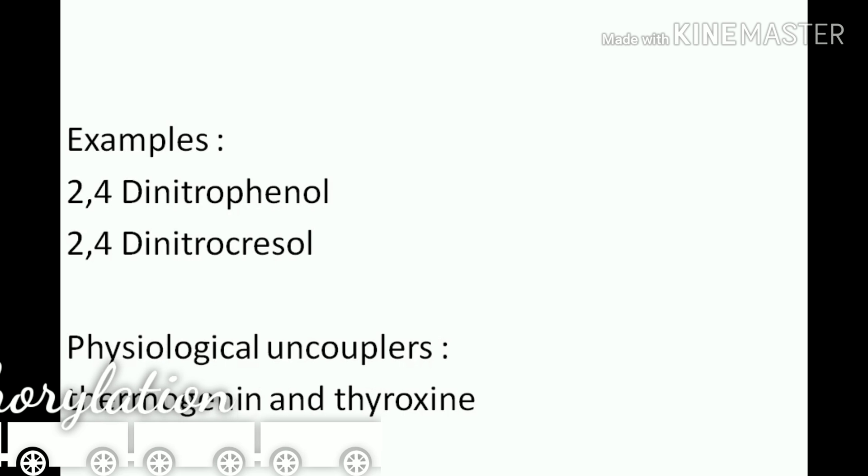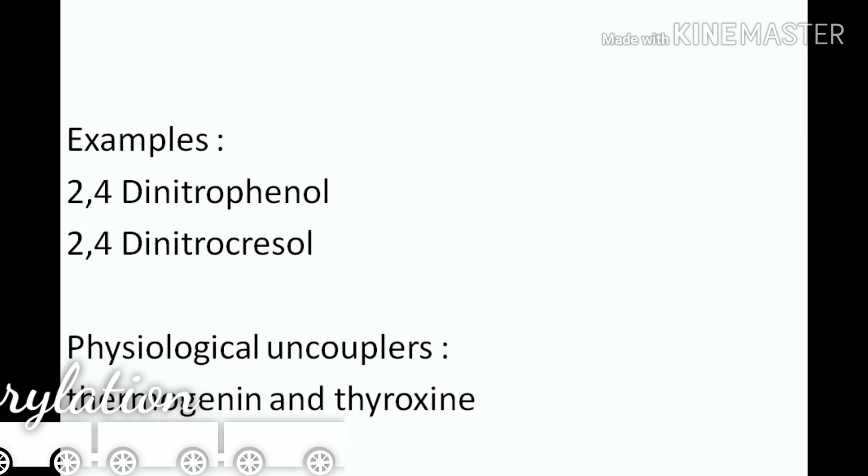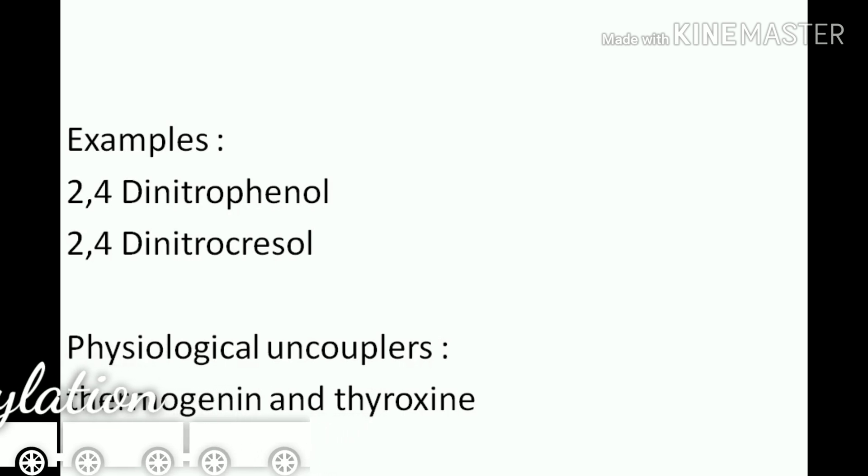Examples are thermogenin and thyroxin. Thermogenin is an uncoupling protein which occurs in the inner mitochondrial membrane of mammals. This protein allows protons to re-enter the mitochondrial matrix without the energy being captured as ATP.